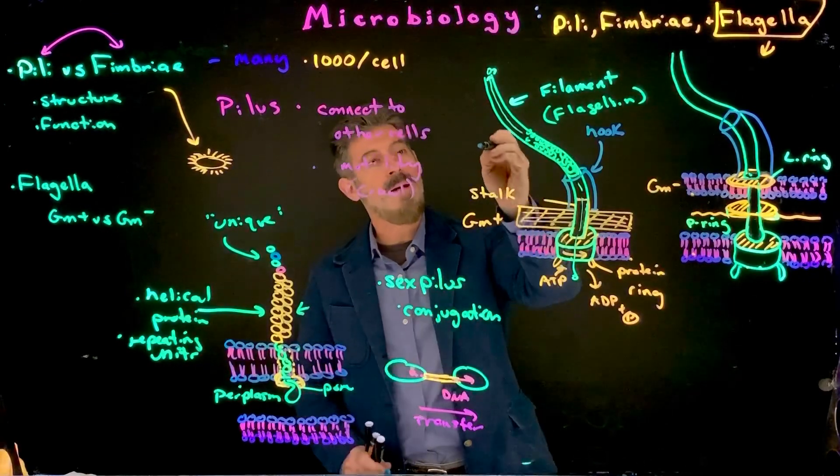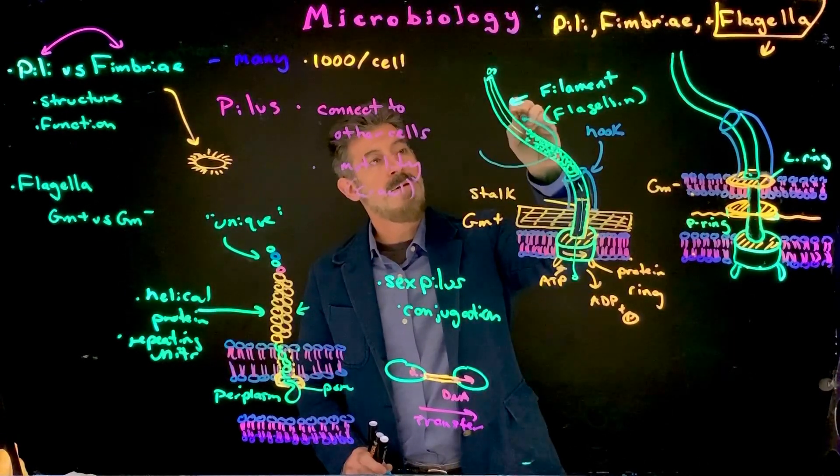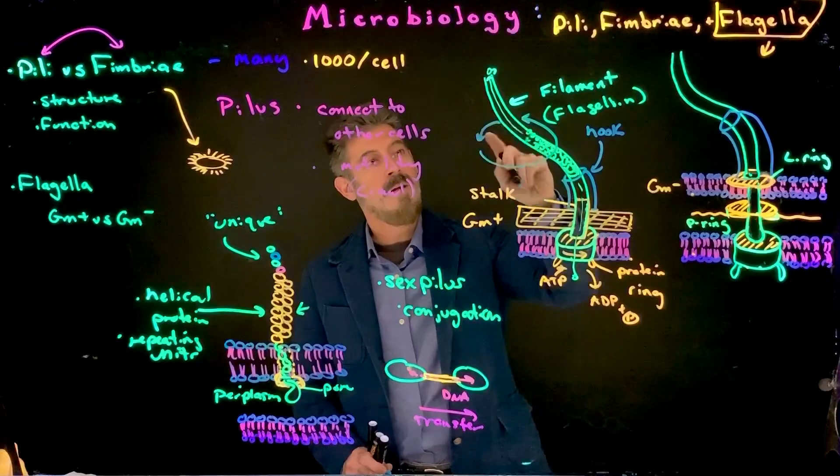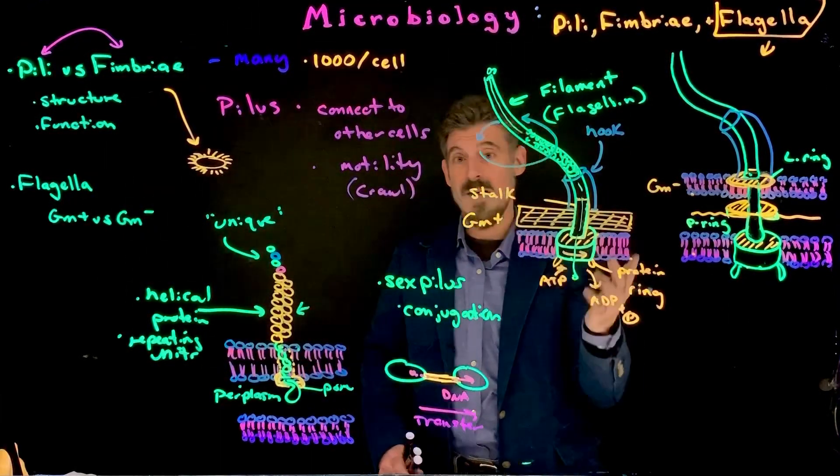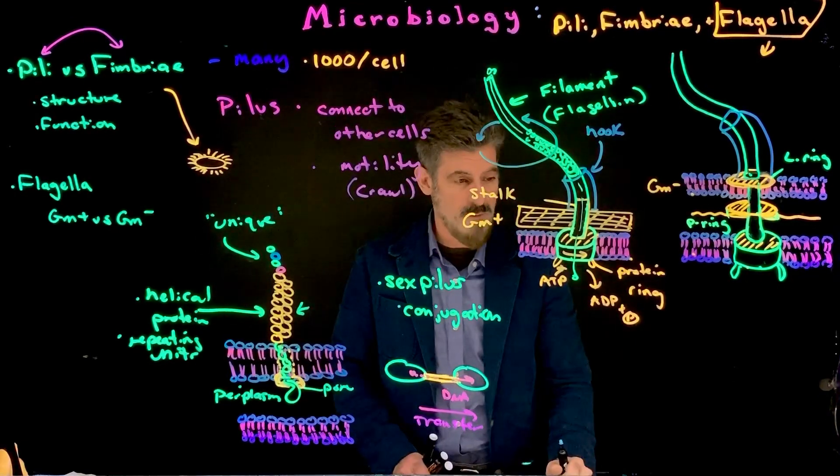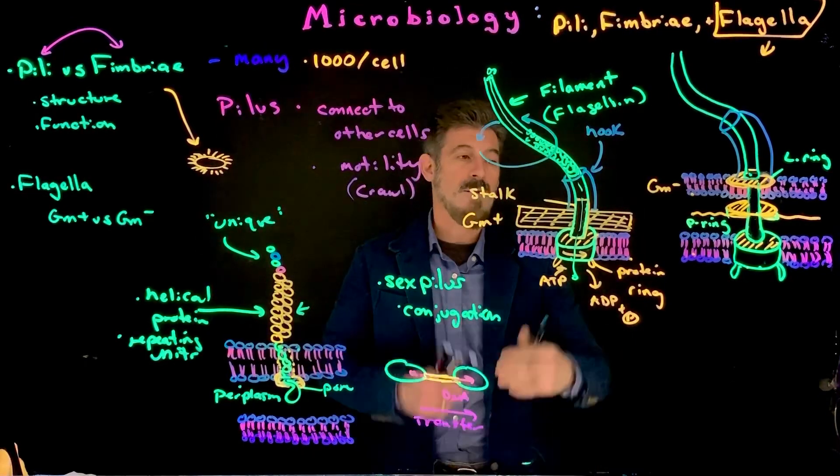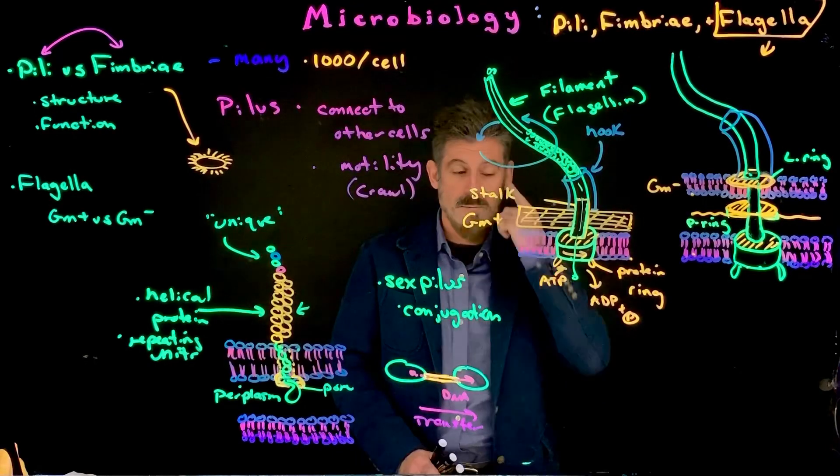Whereas, in bacteria, this structure actually spins around. And that's because of these rings that spin just like a motor, essentially. So, these are motor proteins using ATP in order to change their shape and actually cause them to move.